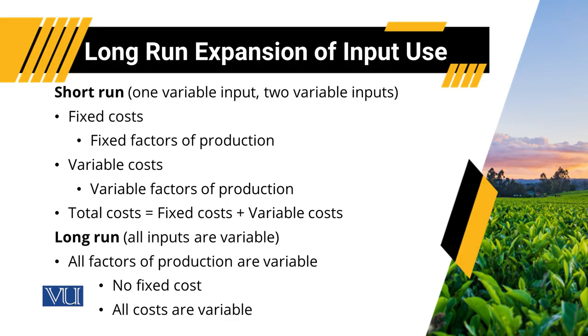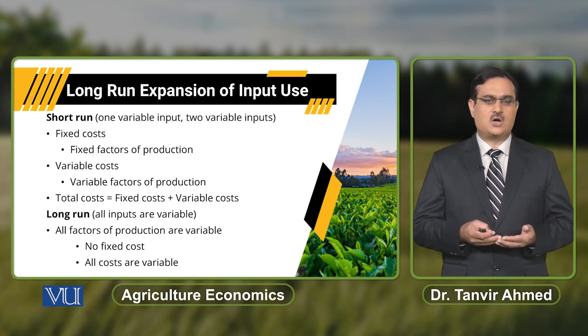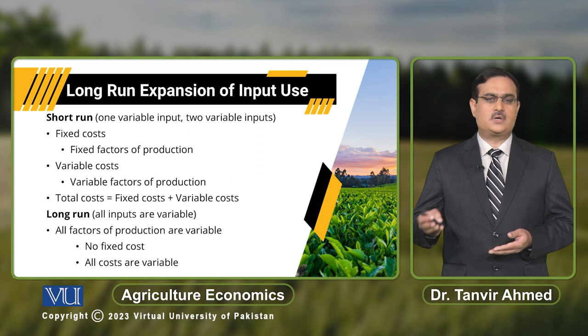When we talk about the short run, there are certain factors of production that remain constant, and usually there is only one variable input. We discussed cases where wheat production is a function of labor, or of the quantity of fertilizer used, or of labor and capital, each against a given quantity of all other inputs.